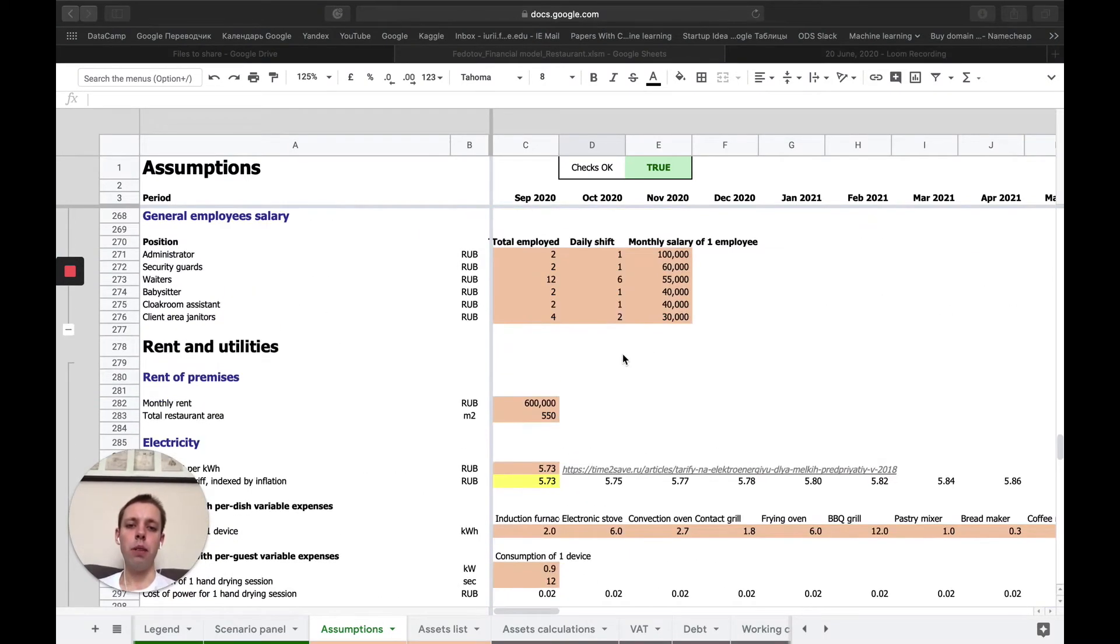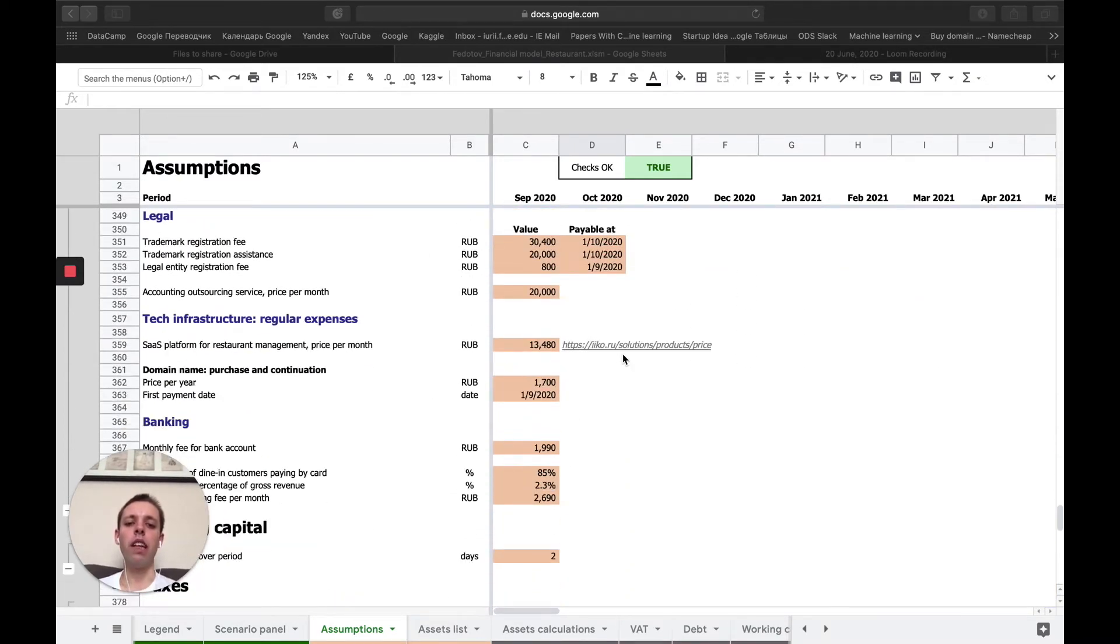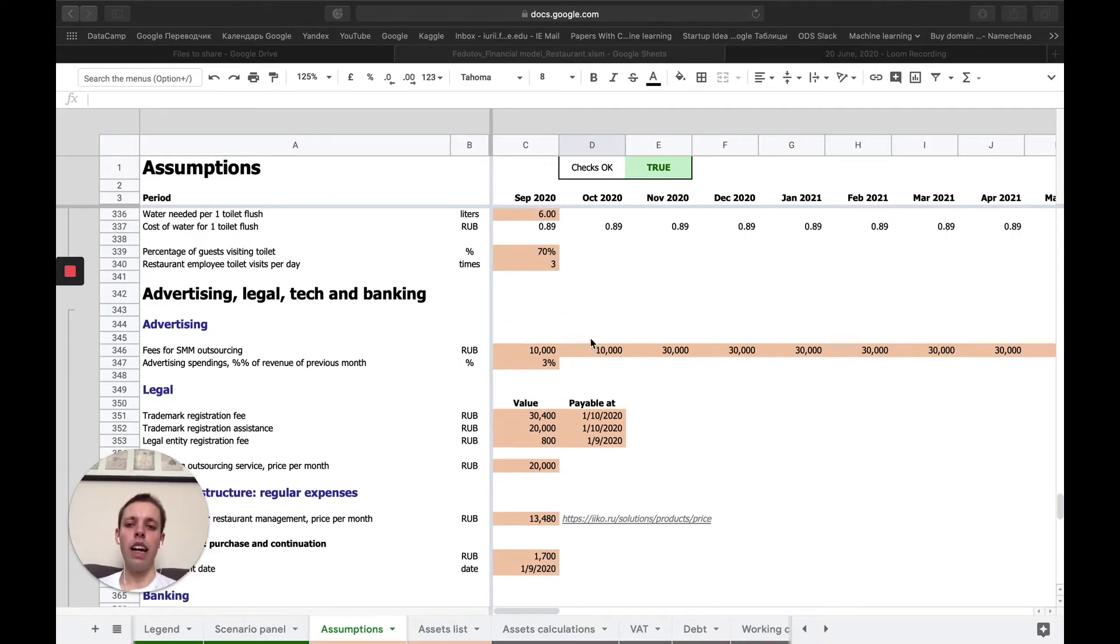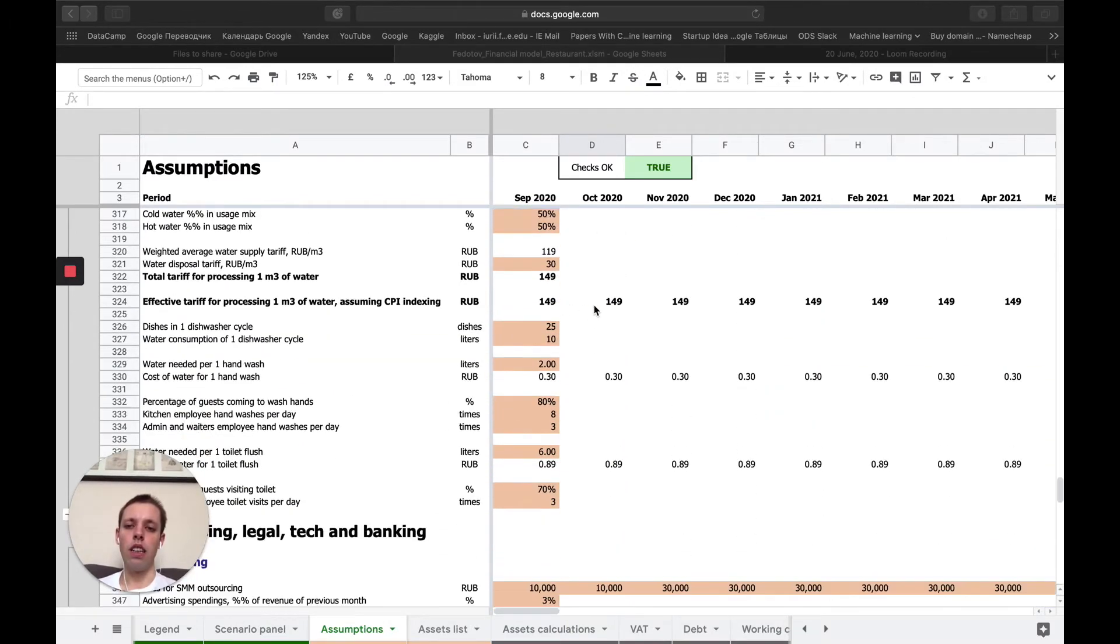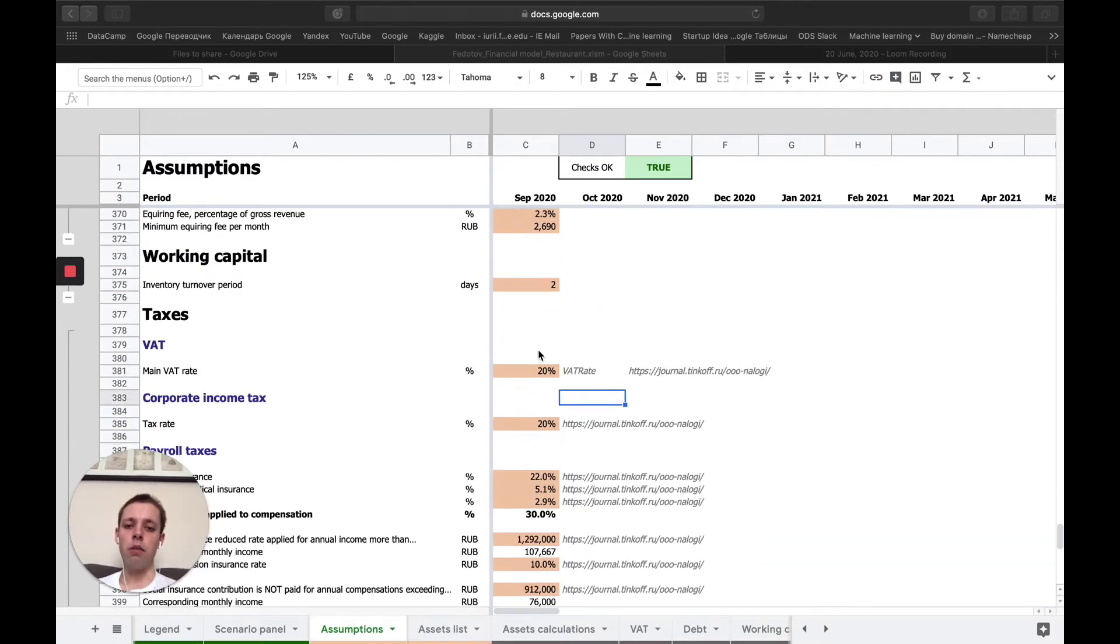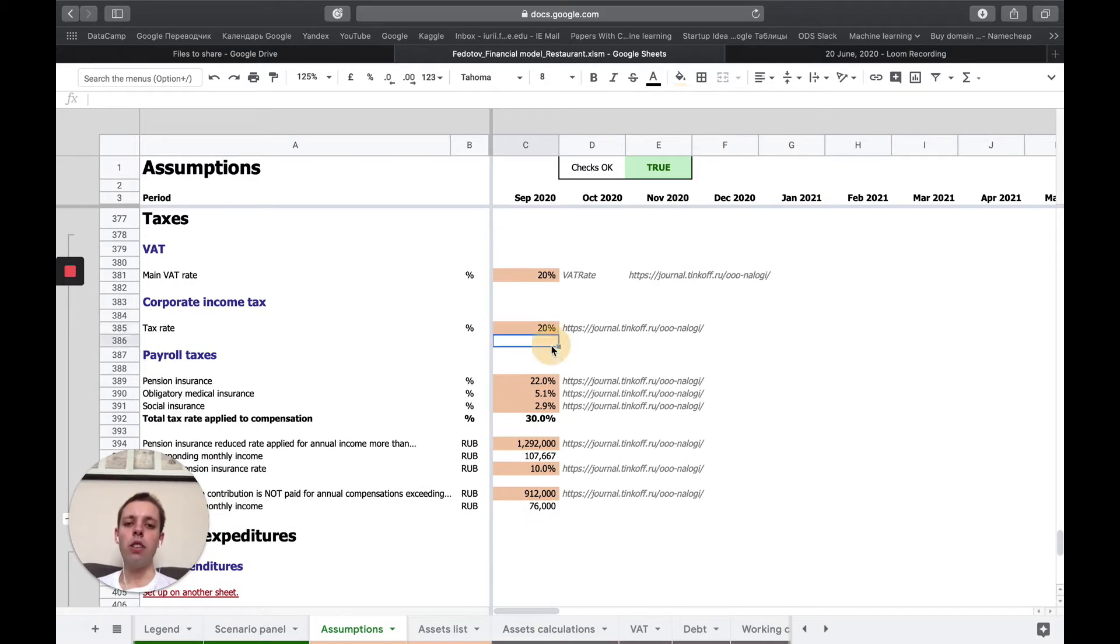Here is a spreadsheet where I have a lot of assumptions which drive all the calculations in this financial model. Let's pick any assumption. For example, the tax rate - where is it here? The corporate income tax rate. I am absolutely sure that if I have this assumption here, this is the only place in my financial model where I input it. I can change it, and if I change it, the whole model gets recalculated.